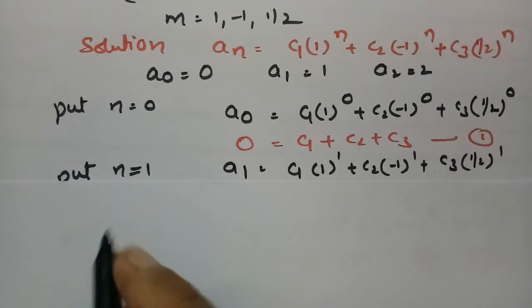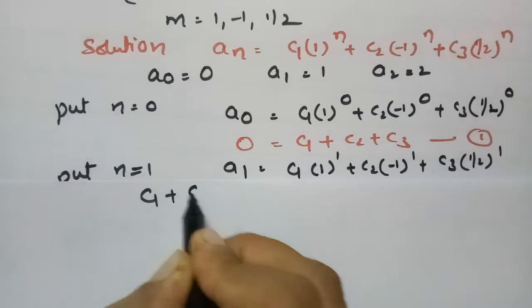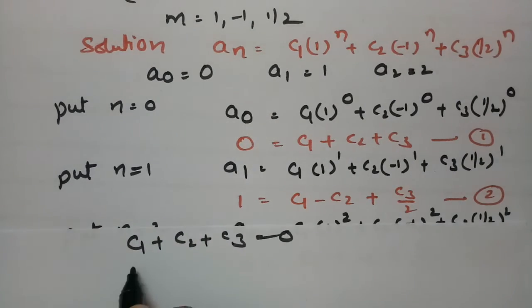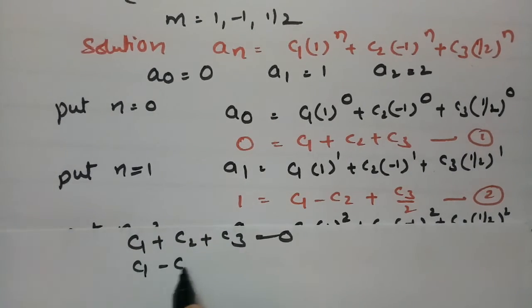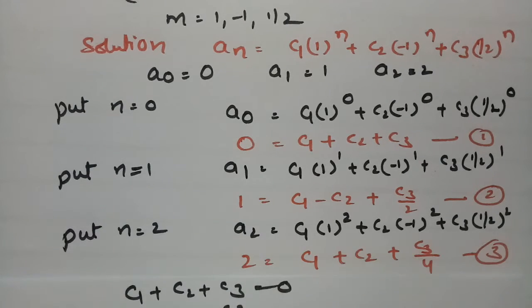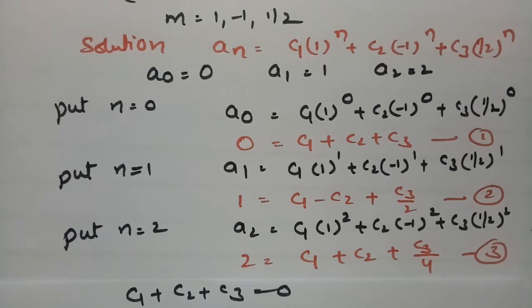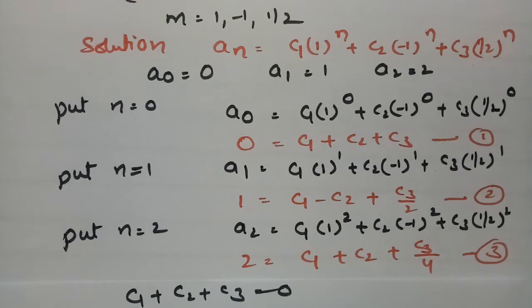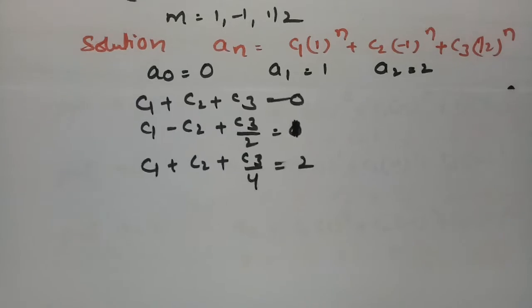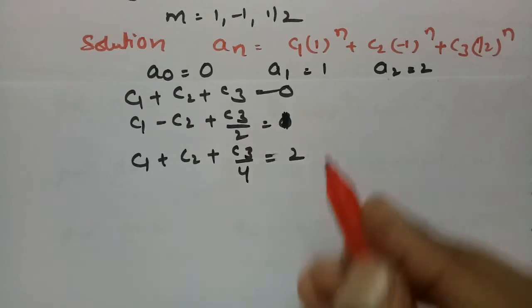Listing the three equations: Equation 1: c₁ + c₂ + c₃ = 0. Equation 2: c₁ - c₂ + c₃/2 = 1. Equation 3: c₁ + c₂ + c₃/4 = 2.